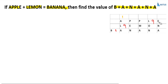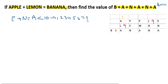So E plus N equals A, which is less than 10, with no carry. Now, what values are available? The digits 1 through 9 are candidates. Observing the constraints: 1 is not possible (already assigned to B) and 9 is not possible (already assigned to L). So A can be one of the remaining values.